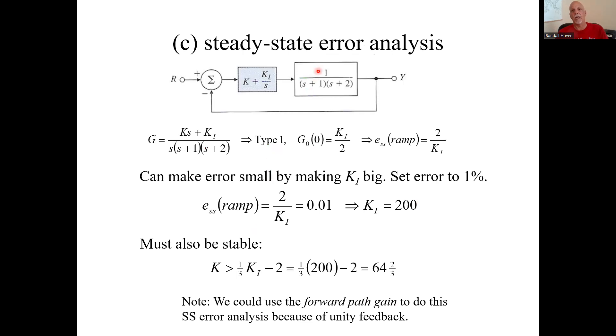Now, steady state error analysis. This is a unity feedback system. We had a shortcut for computing steady state error for unity feedback systems that only required the forward path transfer function. For stability analysis, you need the closed loop transfer function. This guy, because it's unity feedback and we're doing steady state error analysis, you just need the forward path gain transfer function.